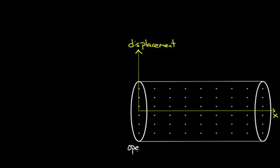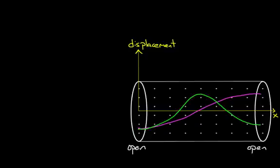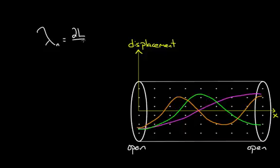Last time we saw that for an open-open tube, or an open-open pipe, a pipe where both ends were open, there were only particular wavelengths that were allowed because you had to have anti-nodes at both ends. We had that one, we had this one, we had this one, and we found the wavelength of all of these. Then we realized we can write down a formula.